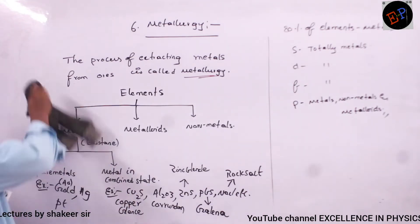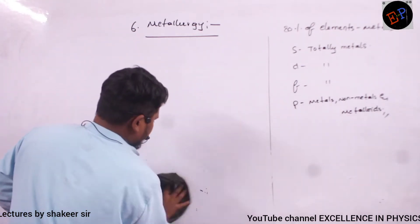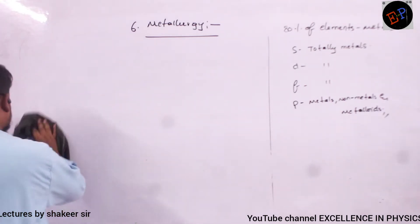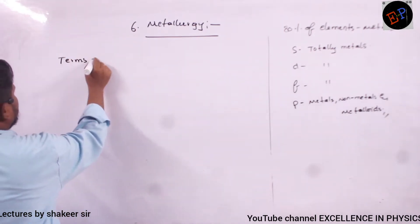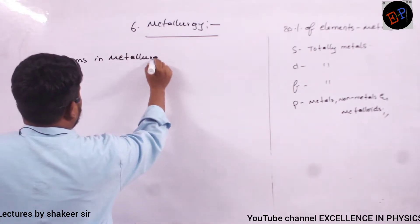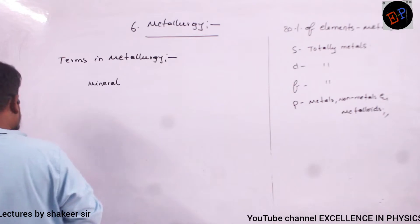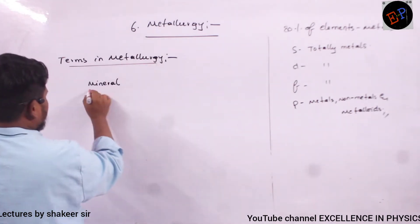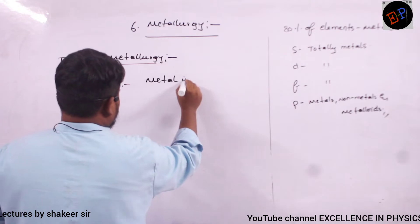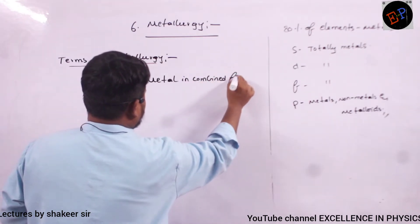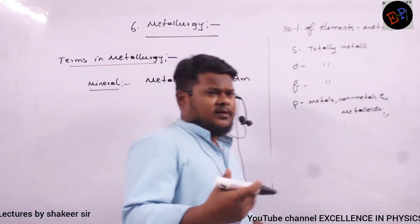Now let us study some terms used in metallurgy. The first term is mineral. A mineral is a metal in combined or compound form. For example, iron has many minerals.